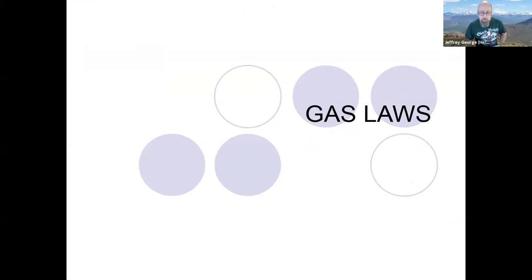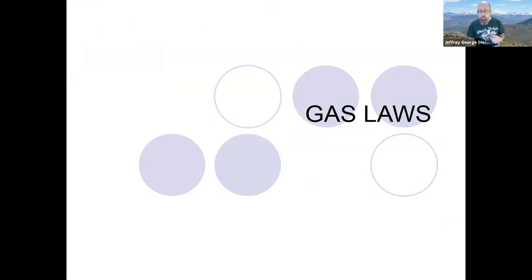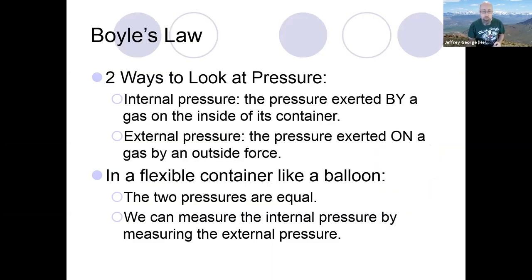So when we're talking about pressure, volume, and temperature, there are three separate relationships that you could look at. We talked about all three in the lab, although we only did two of them in class, and then the third one was in your conclusion question. They have names — you don't have to know these, but they're named after the people that first described these relationships correctly.